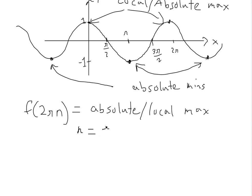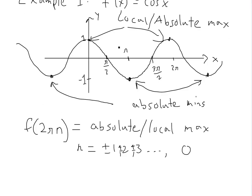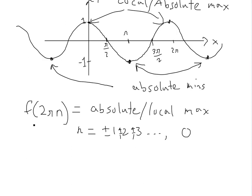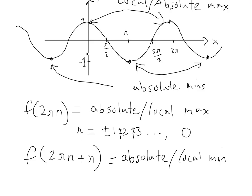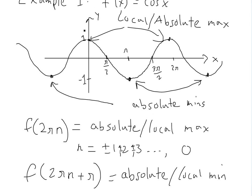If you want to write it as a function, the absolute and local maxima occur at f of 2πn, where n is any integer — plus or minus one, two, three, including zero. For the minima, you just shift by pi: f of 2πn plus pi. So at n equals zero you get pi, at n equals one you get three pi, which gives those minimum points.